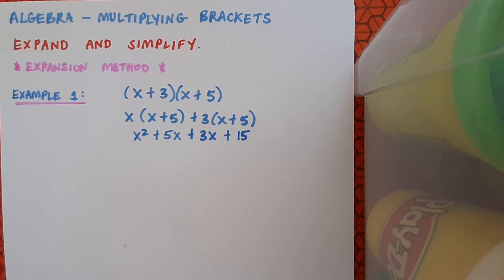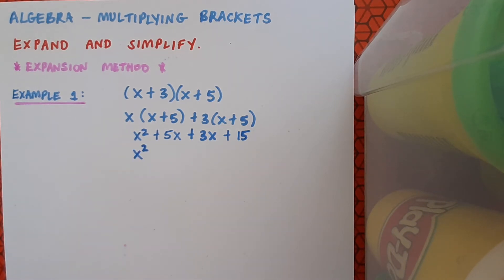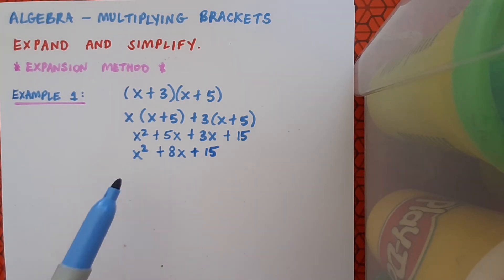I've done all my expanding — I've multiplied out all my brackets — and now I need to simplify by putting like terms together. The x squared is there by itself, no like terms to go with it, so I write down x squared. The 5x and the 3x are like terms: plus 5 plus 3 makes plus 8, so I write plus 8x. Finally, plus 15 has no like term, so it just gets written down as plus 15. This is as far as I can go in example 1.